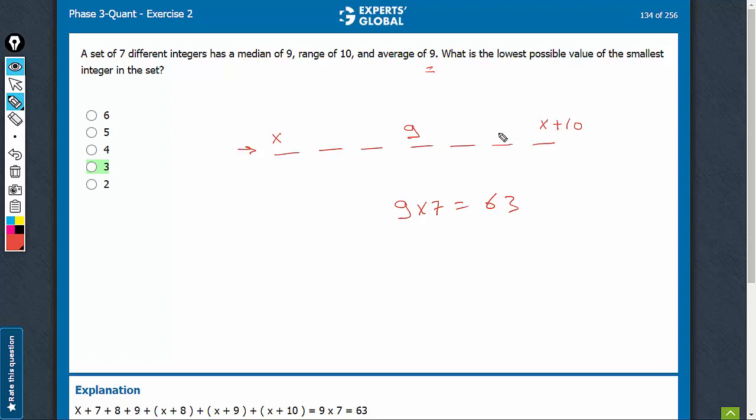If this is x plus 10, this can be x plus 9 and x plus 8. These are the highest possible values, and the highest possible values for the terms here can be 8 and 7.